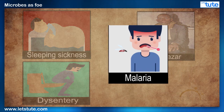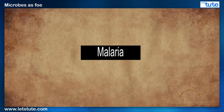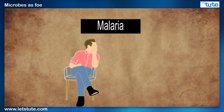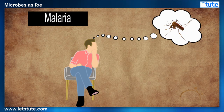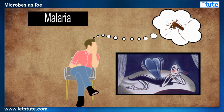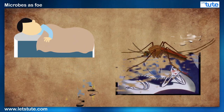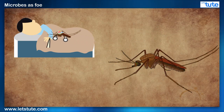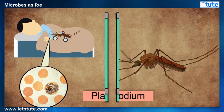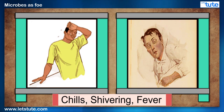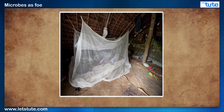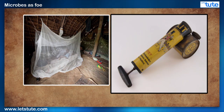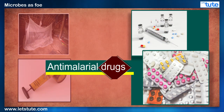Let us take the widely known disease malaria as an example. Most people misinterpret that this disease is caused by mosquitoes — female Anopheles mosquitoes in particular. In reality, mosquitoes are just vehicles or carriers. The female mosquito carries the disease-causing protozoan species called Plasmodium. Repeated chills, shivering, and fever are just a few of many symptoms of malaria. Malaria can be prevented from spreading if we take certain measures, and use of anti-malarial drugs has also been proven effective in recovering from the disease.